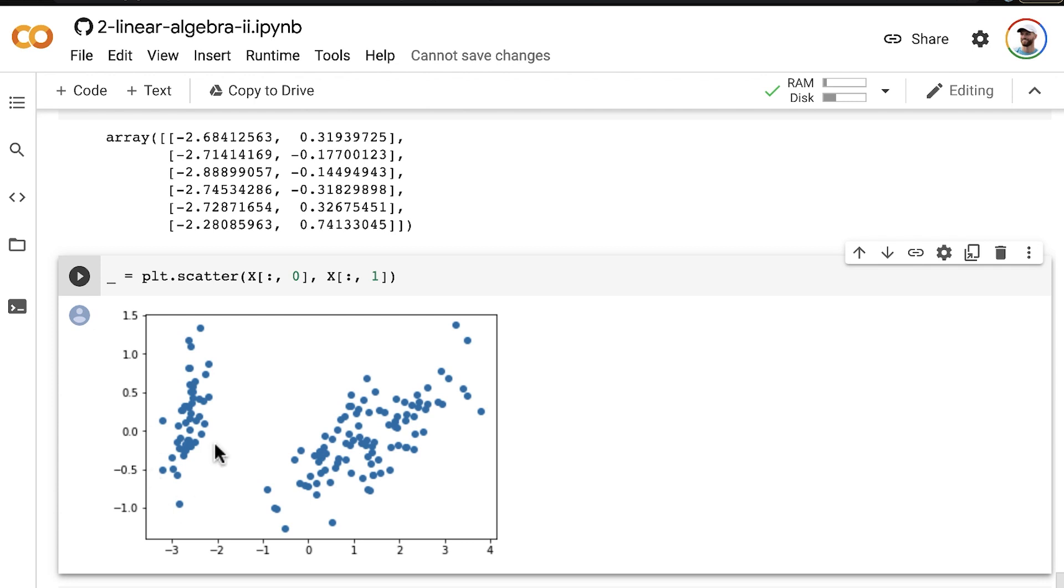So for example, these flowers appear to be different in some substantial way from this group of flowers here. And so you could then use that to investigate further and try to understand what's happening in your data.